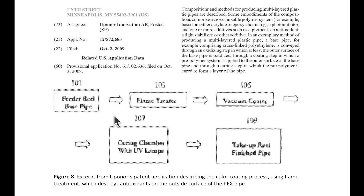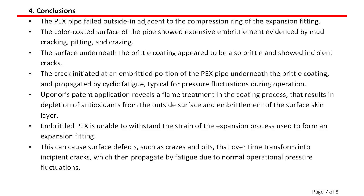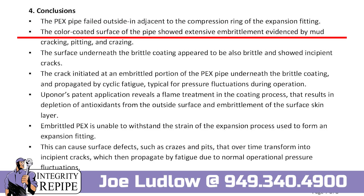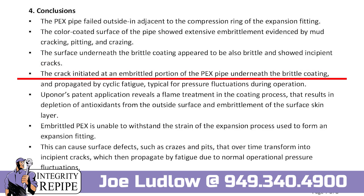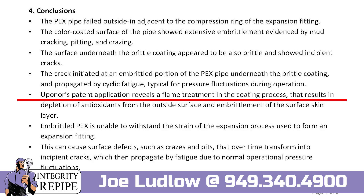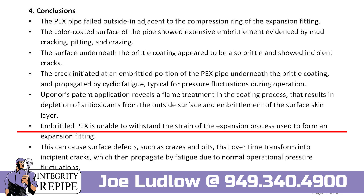The PEX pipe failed outside and adjacent to the compression ring of the expansion fitting. The color-coded surface of the pipe showed extensive embrittlement evidenced by mud cracking, pitting, and crazing. The surface underneath the brittle coating appeared to also be brittle and showed incipient cracks. The crack initiated at an embrittled portion of the PEX pipe underneath the brittle coating and propagated by cyclic fatigue typical for pressure fluctuations during operation. Uponor's patent application reveals a flame treatment in the coating process that results in depletion of antioxidants from the outside surface and embrittlement of the surface skin layer.